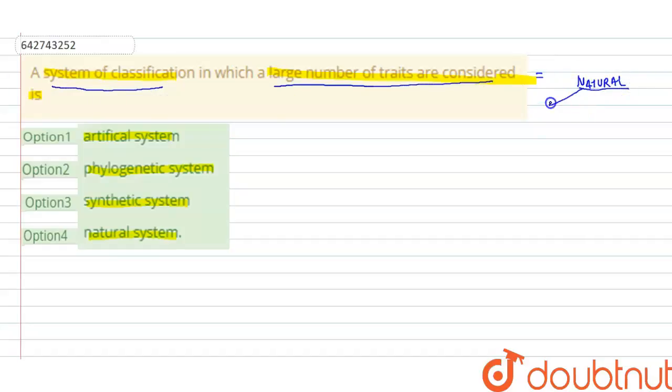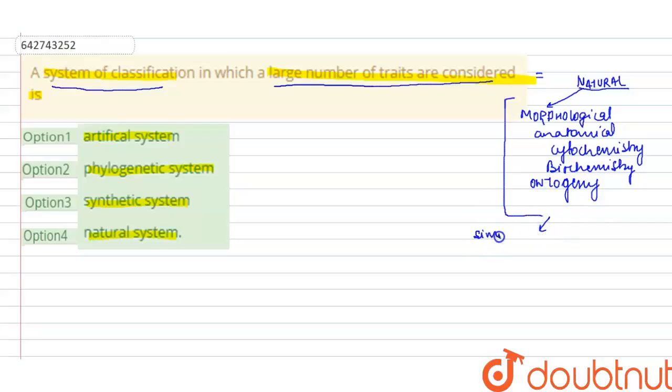Because in natural system of classification, we consider the morphological, we consider the anatomical, cytochemistry—cyto means cellular chemistry—the biochemistry. We even consider the ontogeny in natural system of classification. Hence, at the same time, many characters are being considered to see the similarities